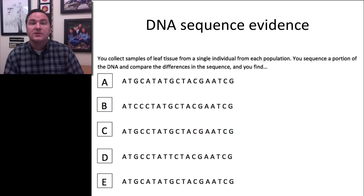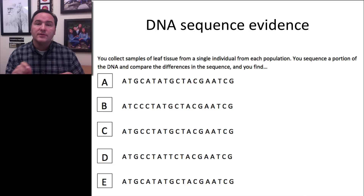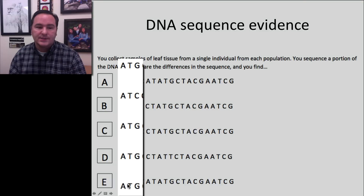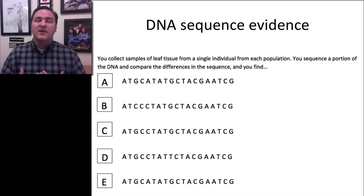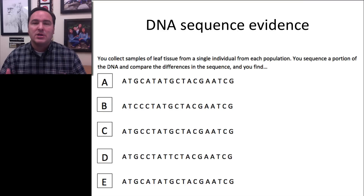Here's a third piece of evidence for these flower species. If we collect leaf tissue from each population and sequence a portion of the DNA, we can read the DNA code for each of the five flowers. Looking at each position in the sequence — for instance, they all have A's at position one, T's at position two, but at position three they all have G's except for C. We can work through the DNA sequence and use those differences as a matrix to reconstruct a phylogenetic tree.